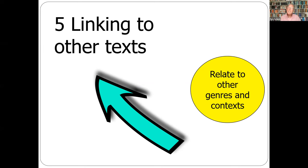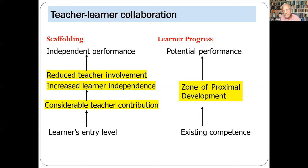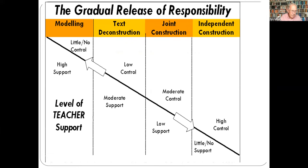The cycle provides scaffolded learning, supporting students through what Vygotsky calls the zone of proximal development — the gap between what students can do now and what they can do after instruction. As we move around the cycle, direct teacher instruction is reduced and students gradually gain more confidence and competence in writing the genre on their own, gaining control as they move to independent construction.